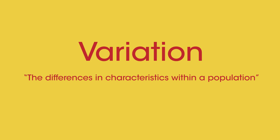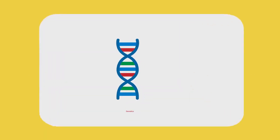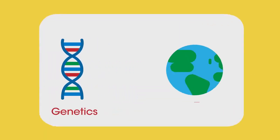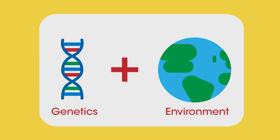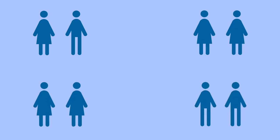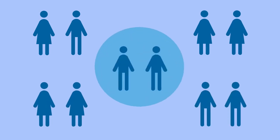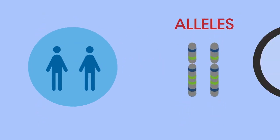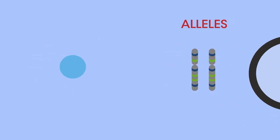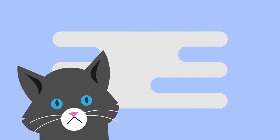Variation is the differences in the characteristics of individuals in a population. It can be due to genetics, the environment, or a combination of both. Let's start with genetics. Different members of a population have different DNA, unless they are identical twins. This means they have different versions of genes called alleles, and these alleles give rise to different characteristics.